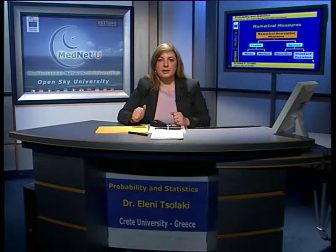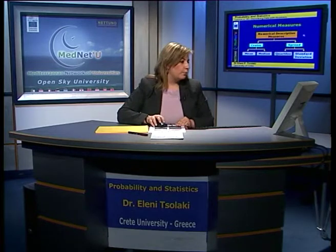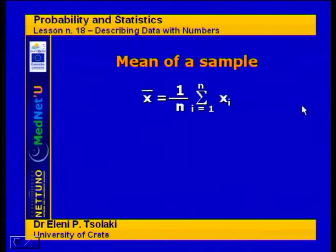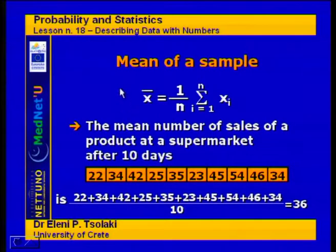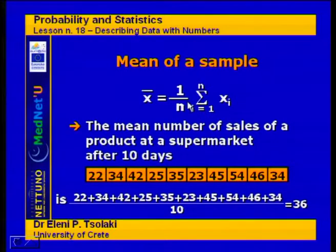Let's start by giving some data and calculate the mean and the median. The mean number of sales of a product at the supermarket after 10 days can be calculated using this formula. We have the sample mean, which can be calculated by summing up all our data and dividing by the number of observations.